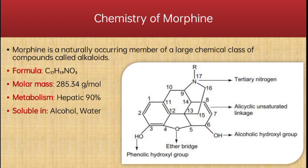Looking towards its chemical structure: it has a phenolic hydroxyl group at carbon number 3, an ether bridge between carbon numbers 4 and 5, an alcoholic hydroxyl group at carbon number 6, an alicyclic unsaturated linkage between carbon numbers 7 and 8, and a tertiary nitrogen.